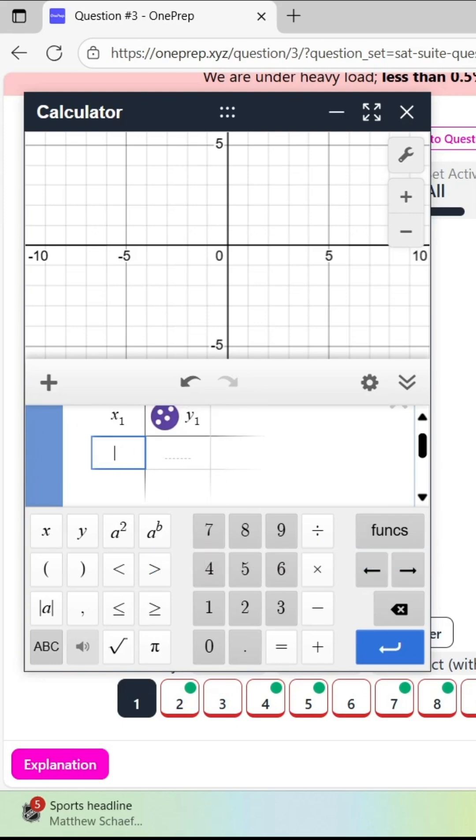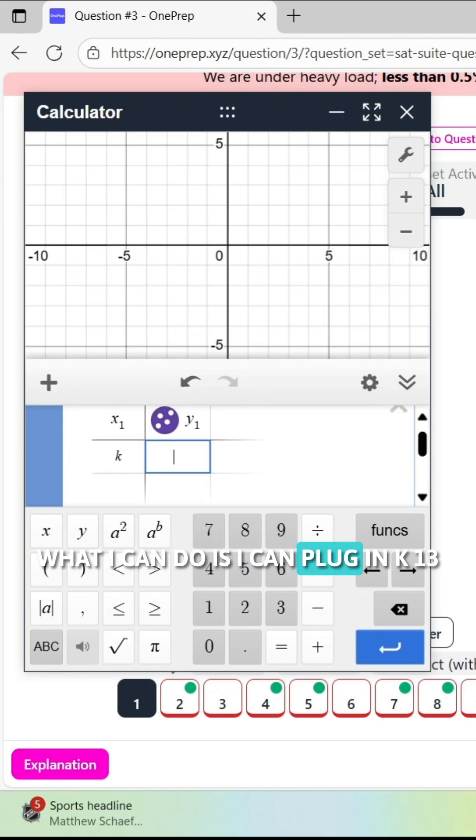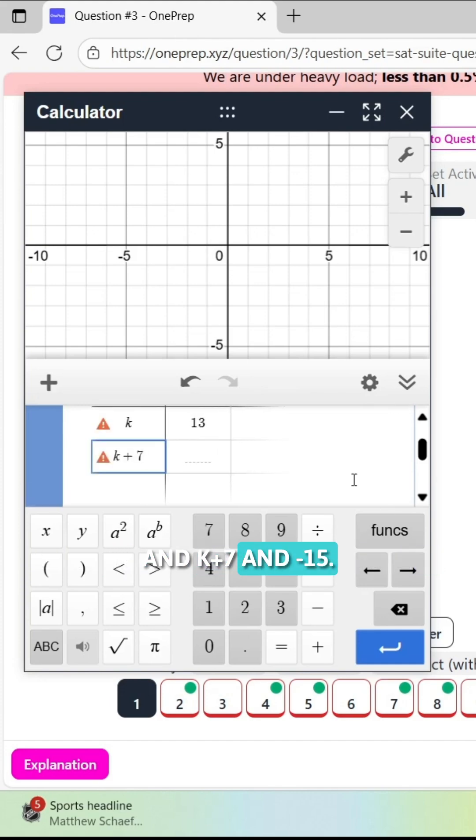and then you can plug in points. So right now what I can do is I can plug in k and 13, and k plus 7 and negative 15.